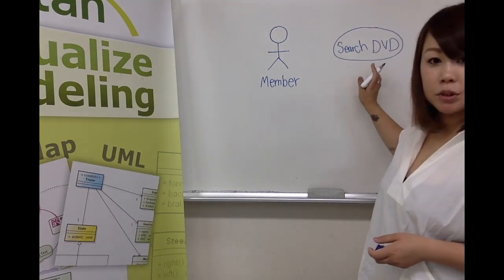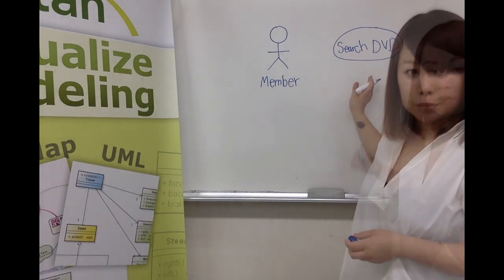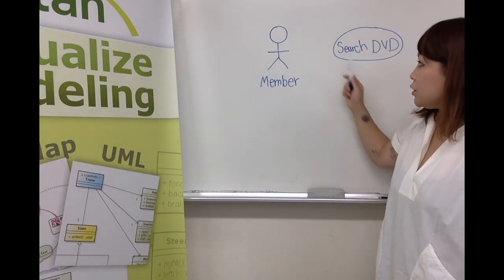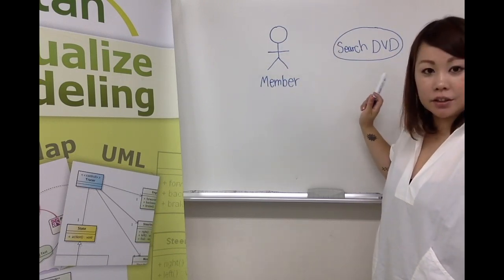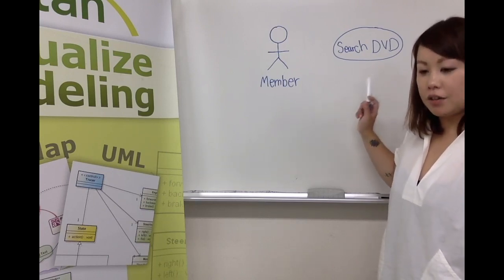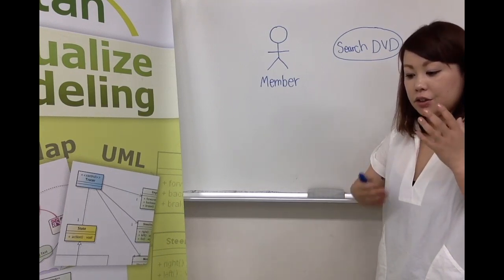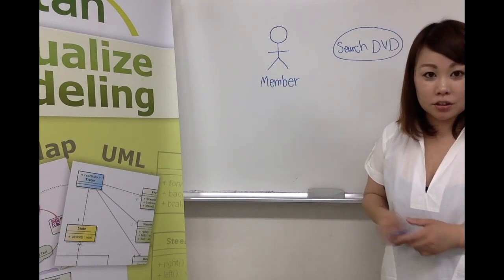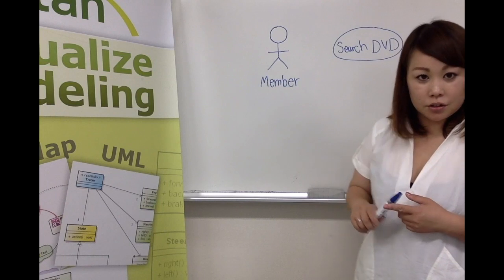Here is a sample use case for the member to search for the DVD at the shop. Each use case has to have a clear goal to satisfy the actor's objectives and do not take use case as a function. Because use cases are often misunderstood as functions and you intend to break them down too deep into sub-functions. Do not do the functional decomposition to a use case.